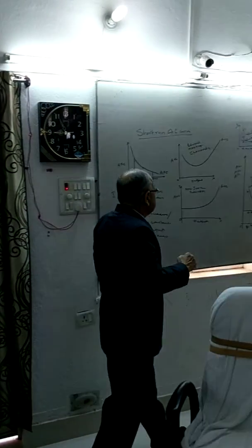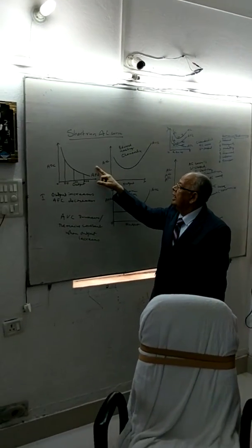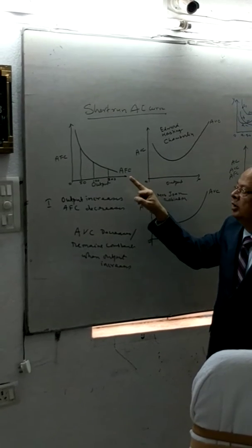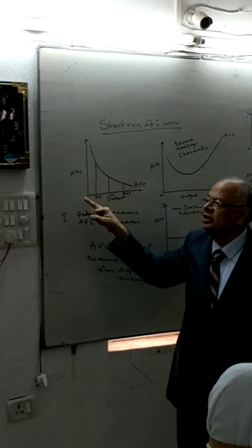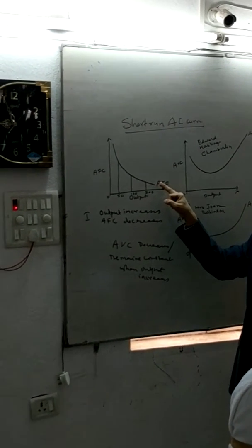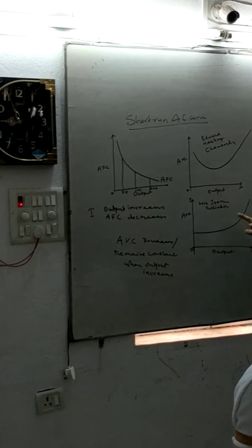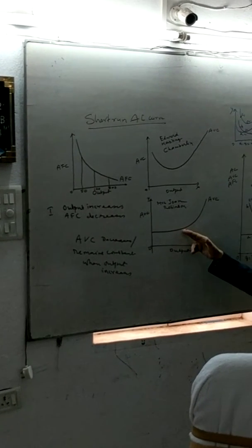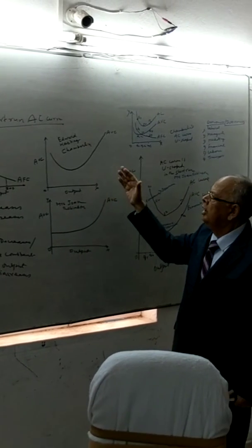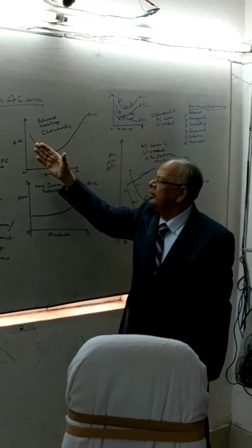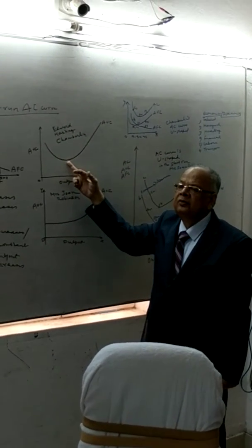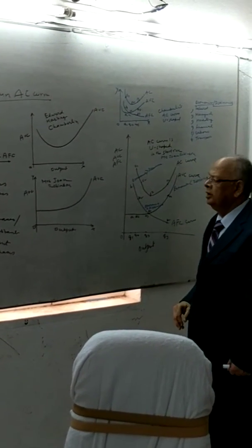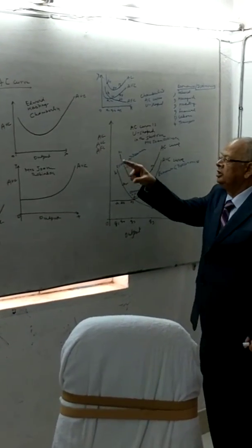In the diagram, in the short run average cost curve analysis, average variable cost is downward sloping — meaning as output increases, average variable cost decreases. This continues till the optimum capacity of the plant. Joan Robinson said that average variable cost in the initial period will be constant, and when plant capacity is reached, it will rise. Chamberlin gave a U-shaped average variable cost: it decreases until it is minimum at the point of optimal utilization of the plant, and thereafter it increases.